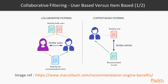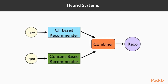Finally, we have the hybrid system. It takes two inputs: user similarities and item similarities. These go through a collaborative filtering filter and a content-based filter, and then the results are combined to make the final recommendation.